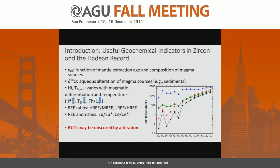On the right here I have an example rare-earth element diagram with several example zircon REE patterns. In black is a typical terrestrial crustal zircon, where you have fairly low light rare-earth elements, more abundant heavy rare-earth elements — a steep slope — with a positive anomaly in cerium and a negative anomaly in europium.